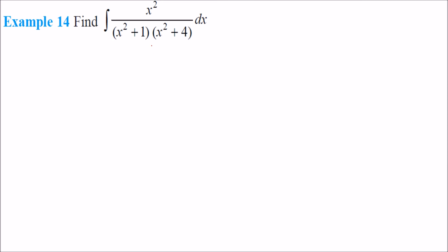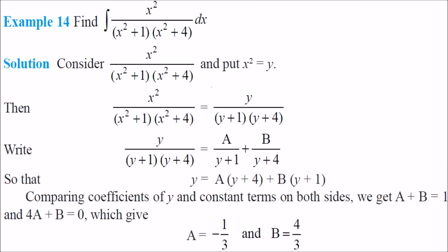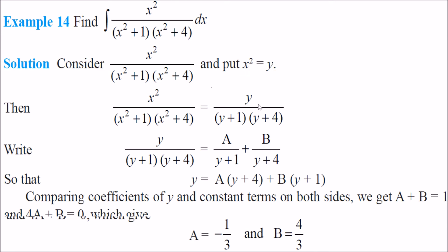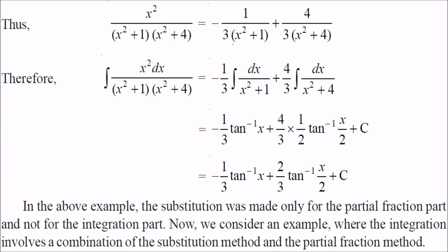Next: ∫x²/[(x²+1)(x²+4)]dx. This is not in standard linear partial fraction form, so substitute y = x². Then the expression becomes y/[(y+1)(y+4)], which can be written as A/(y+1) + B/(y+4). Solve for A and B by equating like terms.